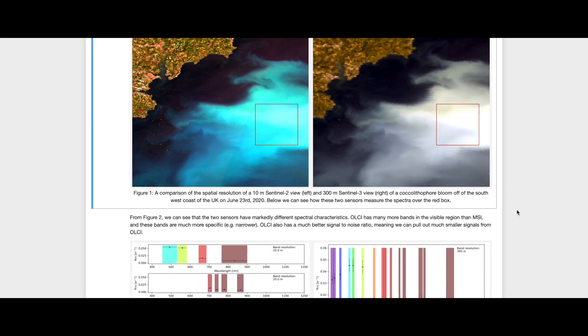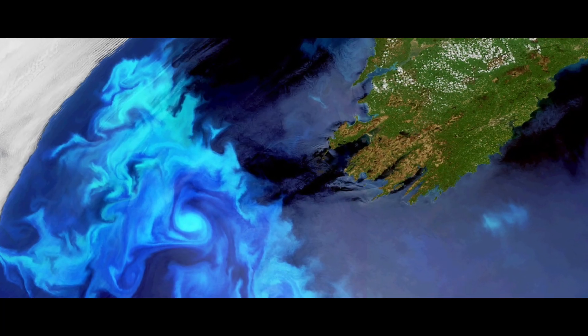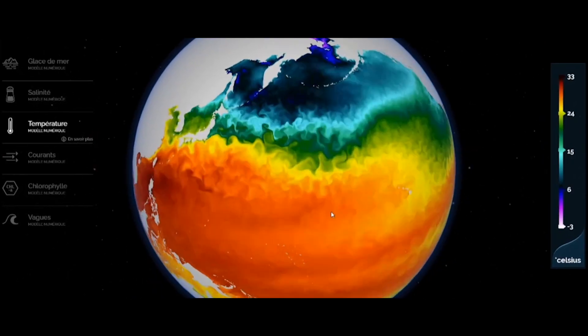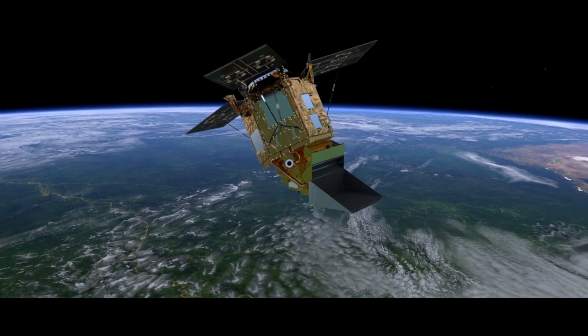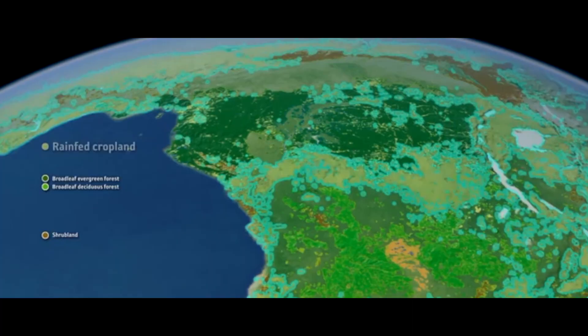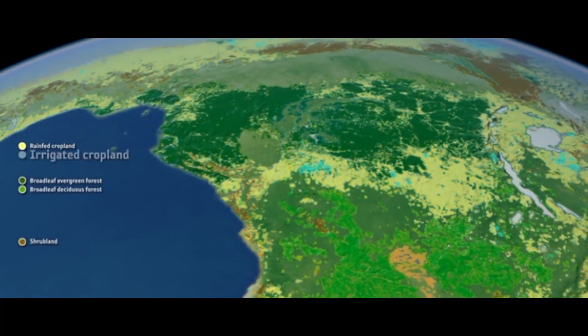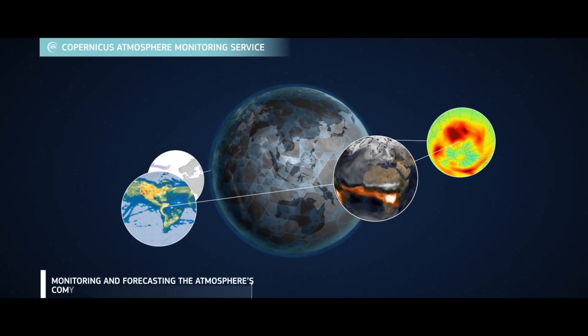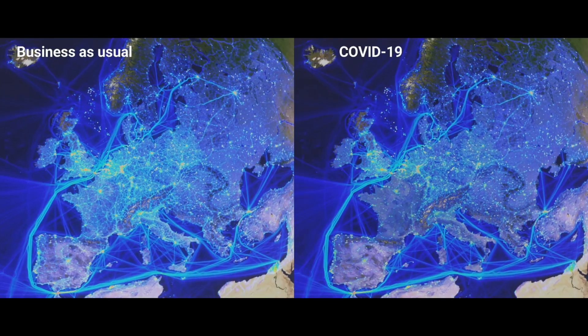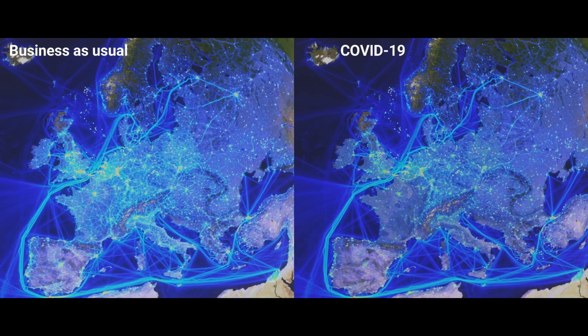We're going to cover four thematic areas: oceans, atmosphere, land, and climate. In each of these topics you'll be learning from experts who use AI to discover more about earth and to solve some of the fundamental problems that we face as a society.